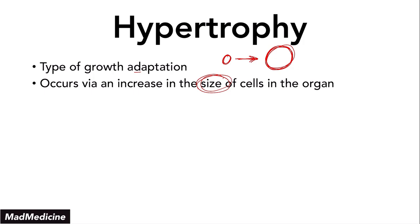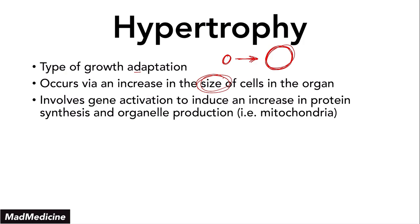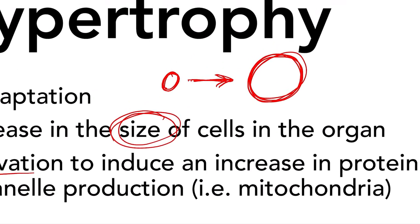Another key important thing to remember is that hypertrophy involves gene activation to induce an increase in protein synthesis and organelle production. Think about this logically: when you have a small cell, it has organelles, protein production, and protein synthesis happening — the cell is filled up. Eventually, you put some stress on the cell, and that causes the cell to go through hypertrophy and grow in size.